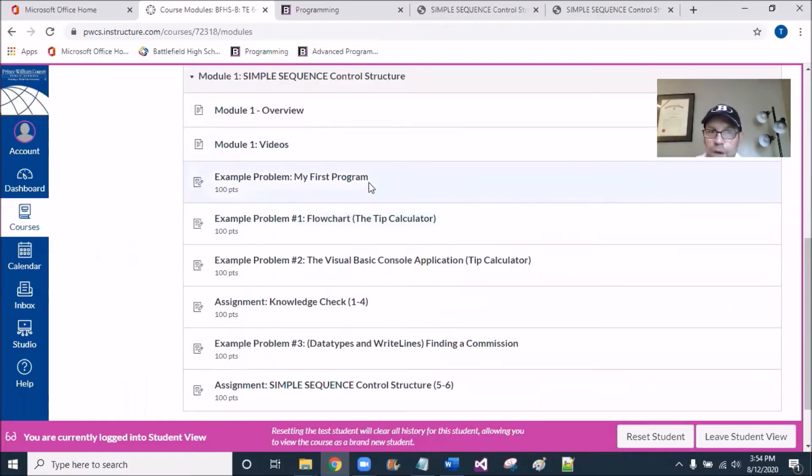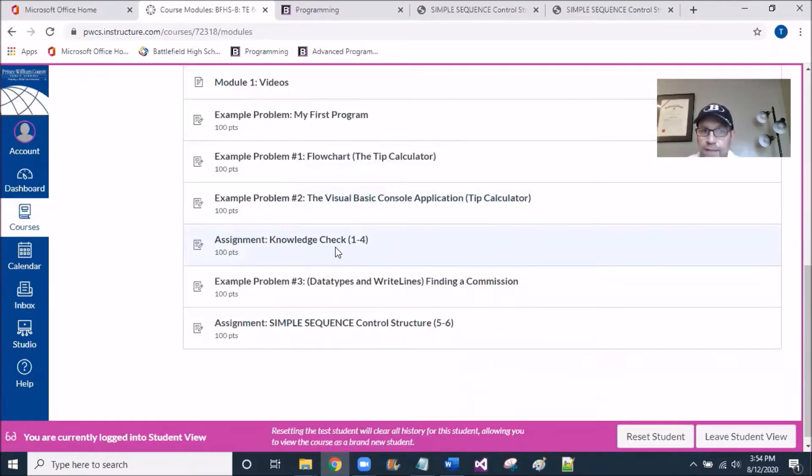So just to recap, there have been three example problems, even though it's called example problem 3, there have really been four times that I've drawn upon some participation grades. We just build it and you'll get full credit. Then we had an assignment with the knowledge check that really dug in and had to do some drawing of the flowchart and the arithmetic a little bit.